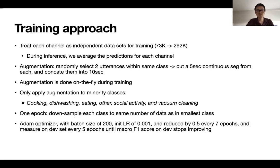And for one epoch, we define as follows. We downsample each class to the same number of data as in the smallest class. So the smallest class here is vacuum cleaning. So we will downsample each of the other classes to have the same number of utterances as this vacuum cleaning. Then we loop through each sample as one epoch. And for optimizer, we use Adam with a batch size of 200, initial learning rate of 0.001 and reduced by 0.5 every seven epochs and measure on the dev set every five epochs until macro F1 score never improved on the dev set.